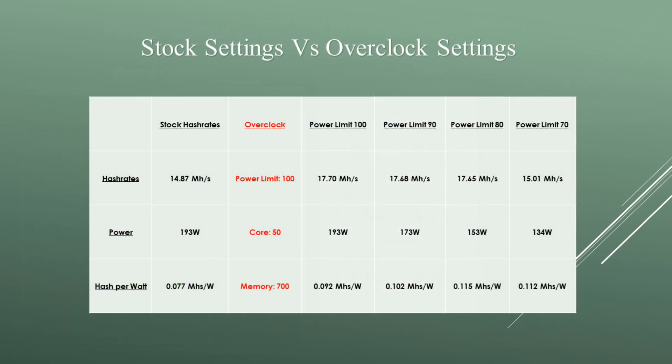In conclusion, comparing the overclocks, putting the power limit around 80 is the best hash per watt ratio. But depending on your situation, you do want to adjust your power accordingly.